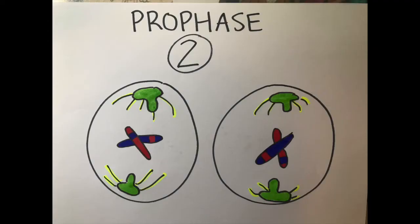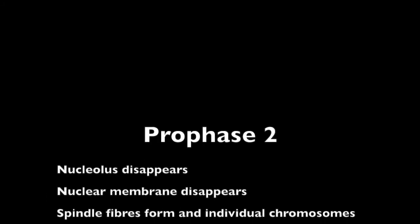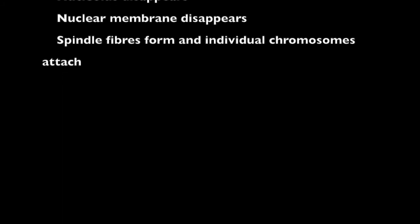In prophase II, the nucleolus disappears, the nuclear membrane disappears. The spindle fibers form and individual chromosomes attach to spindle fibers.